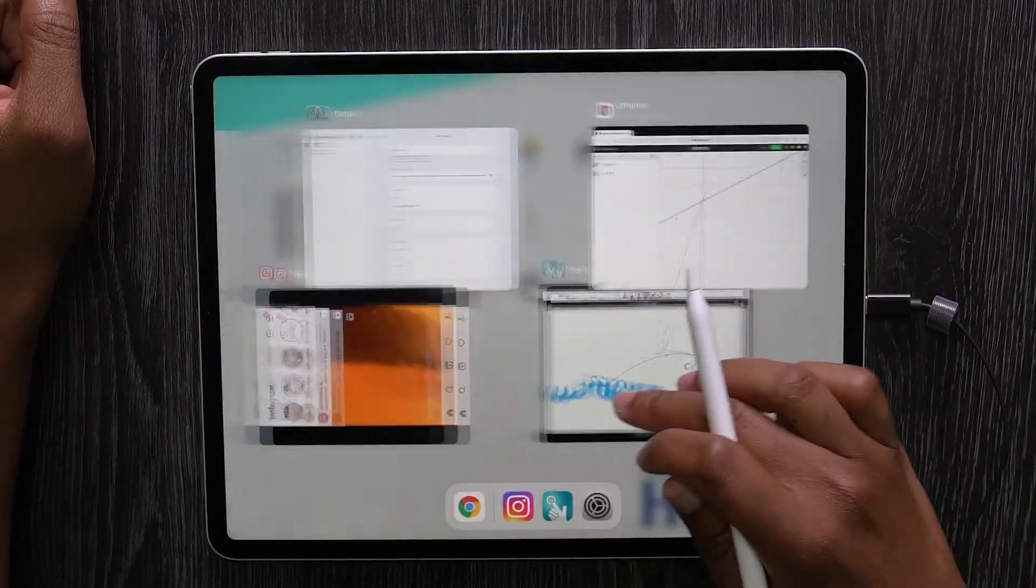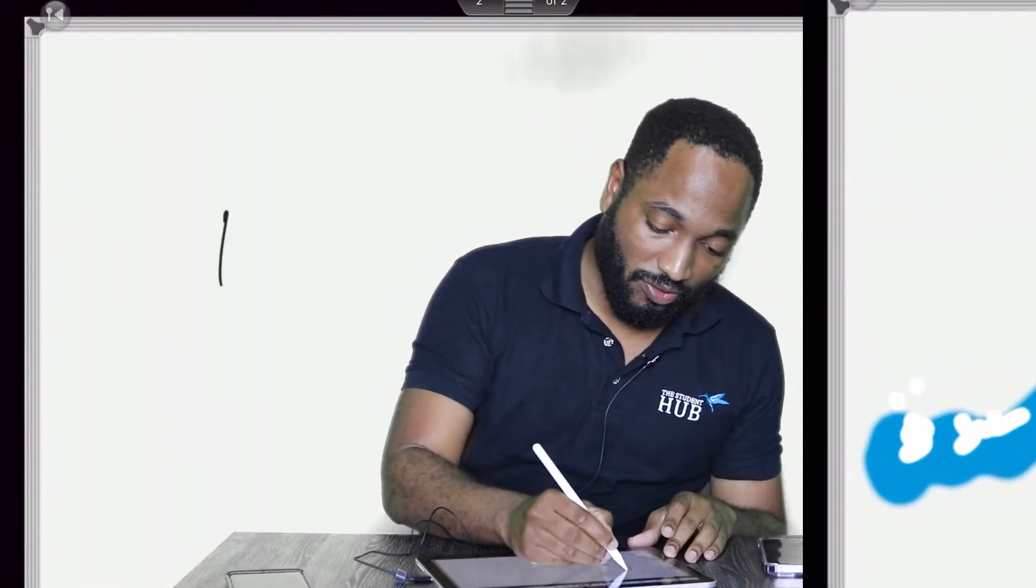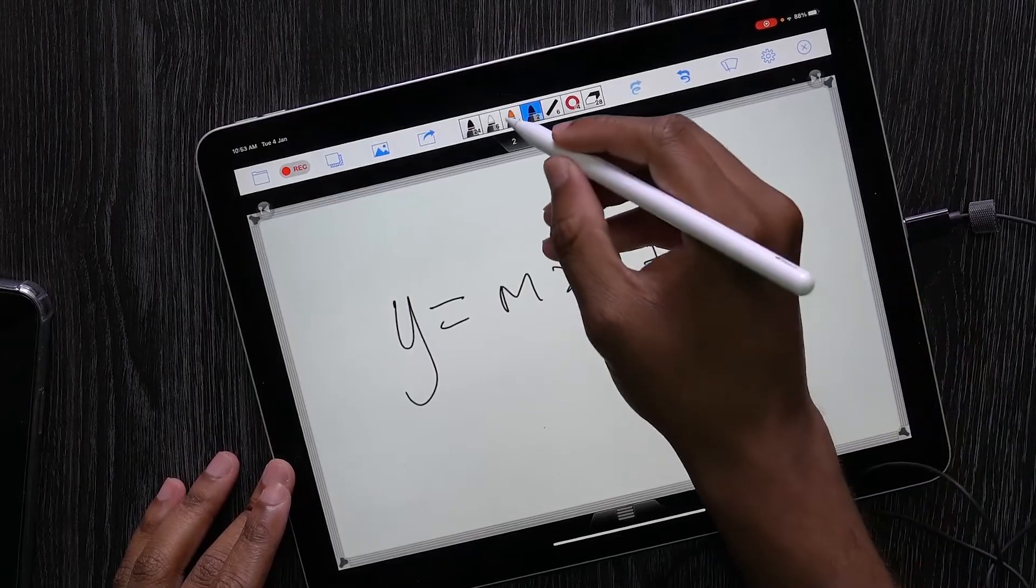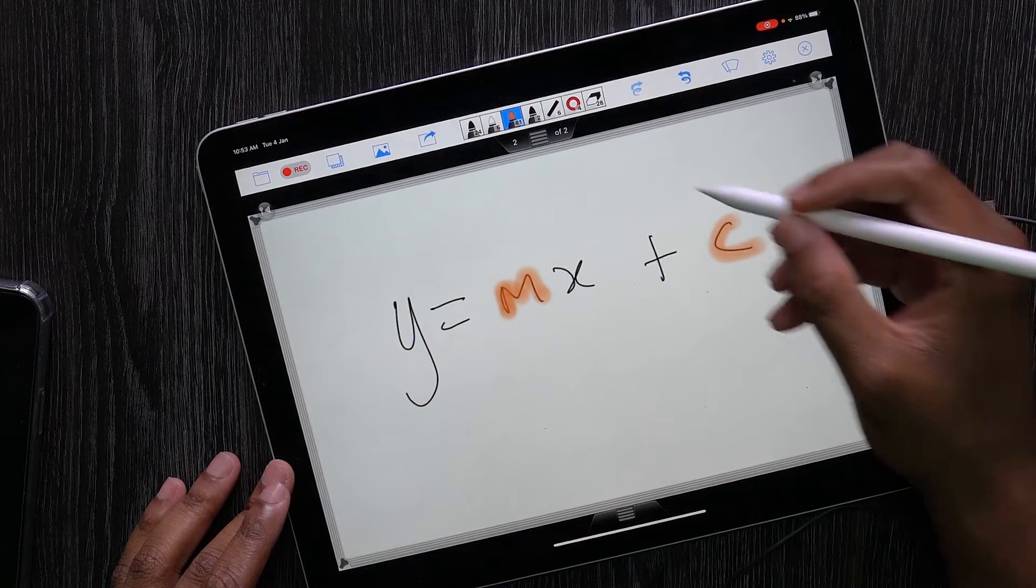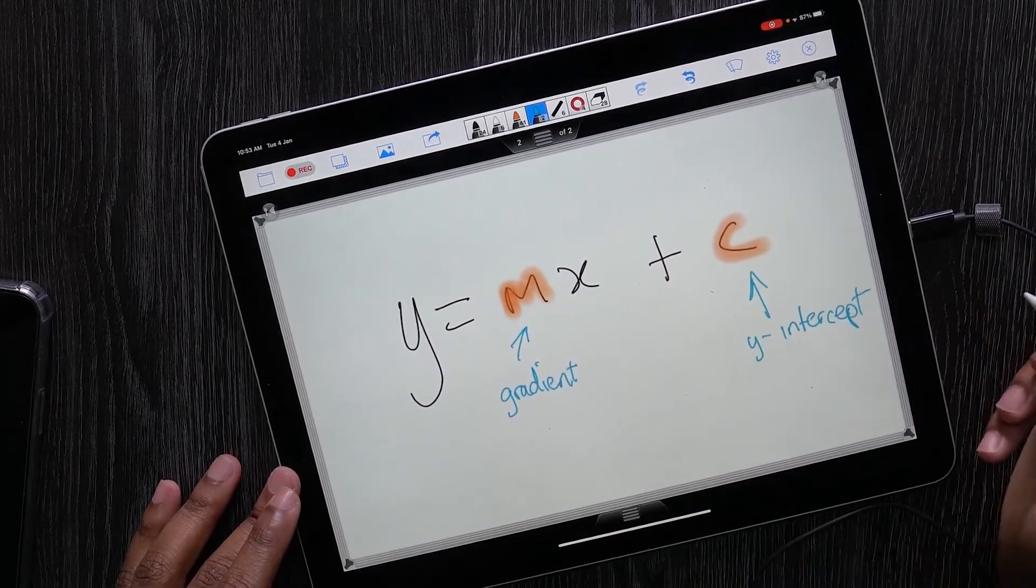From this we can see that this is where we got this formula. The y equals mx plus c, and the m is the gradient, and the c is the y-intercept. m stands for gradient, c stands for y-intercept.